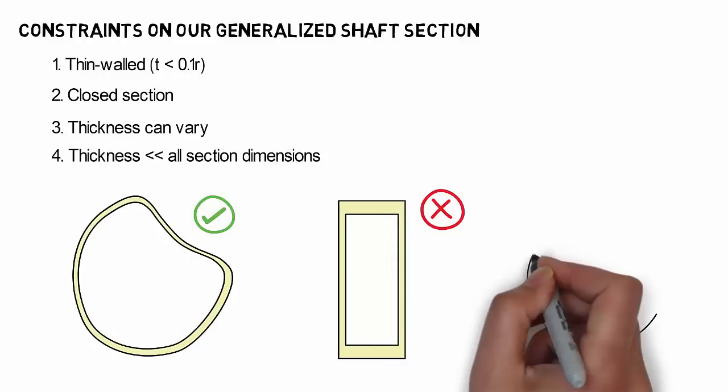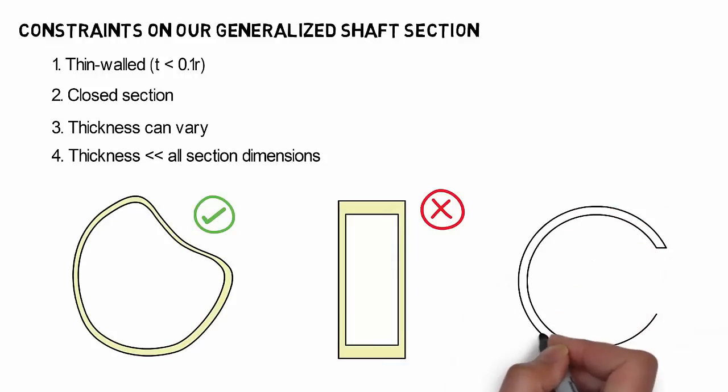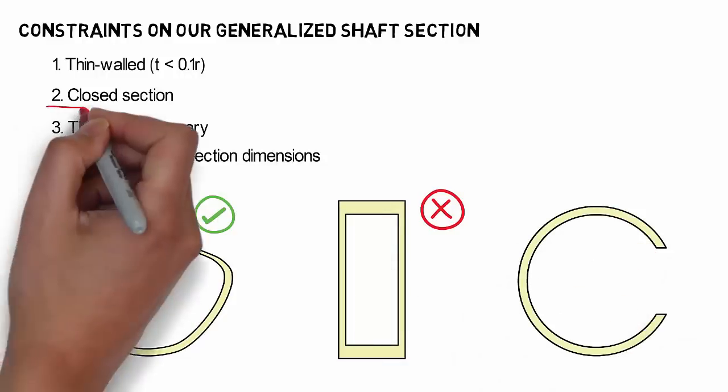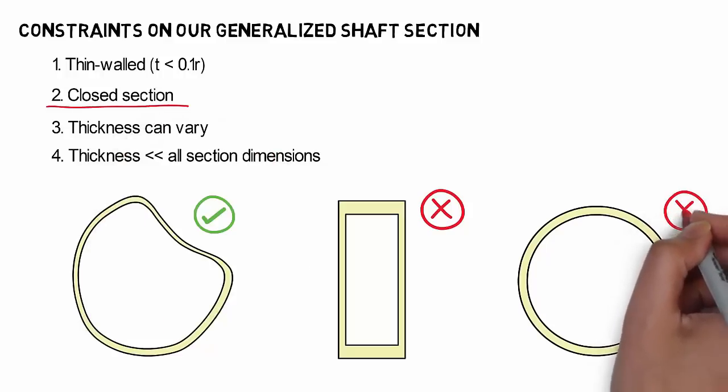Finally, the last cross-section is also not suitable as it is an open section rather than a closed section. Let's use the first section to illustrate our generalized shaft.